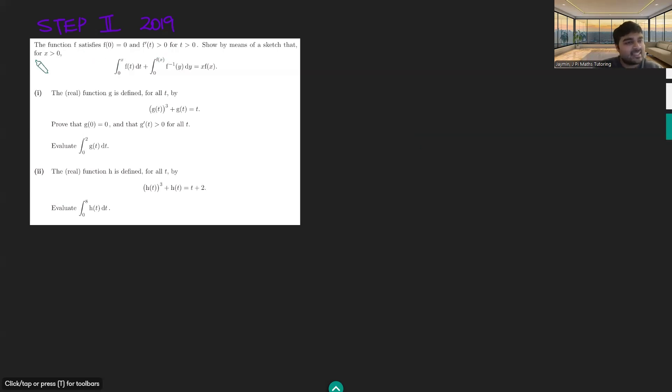Let's start with the first bit, part 0 if you like, to show this result here. So we're told that f(0) = 0 and f'(t) is positive for all t, and it tells us to draw a sketch here. So let's probably sketch this graph.